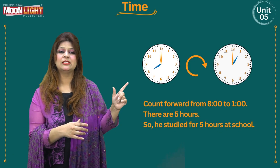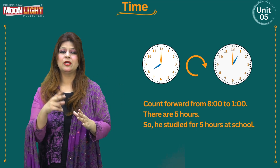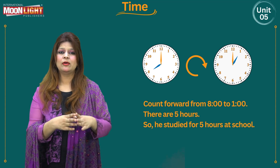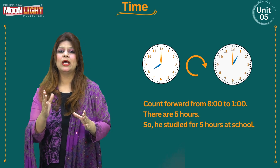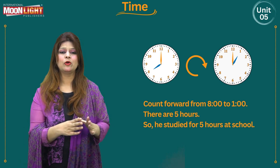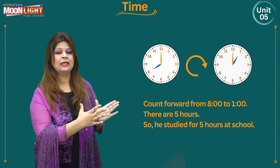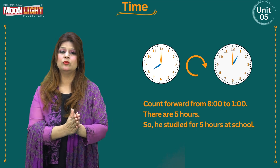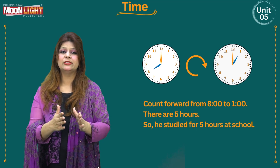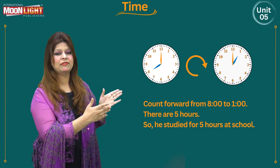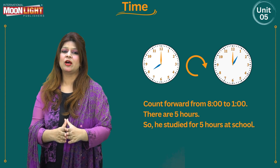Count after 8: there is 9 — that's 1 hour; then 10 — that's 2; then 11 — that's 3; then 12 — that's 4; and then 1 — that's 5. So there are 5 hours total. The small hand moves 5 times to get to the time when he leaves school. He studied for 5 hours at school.